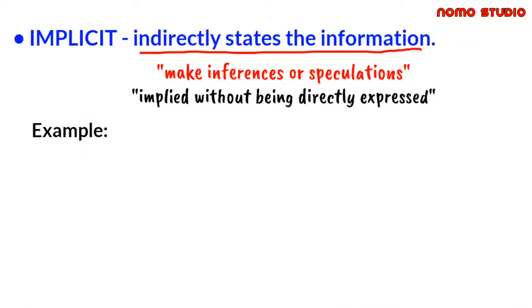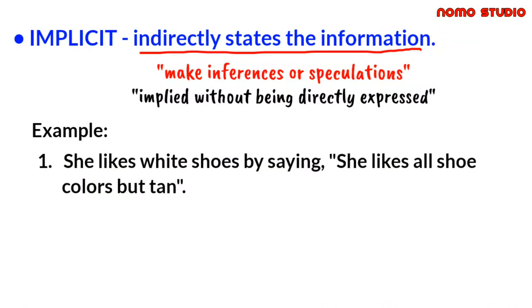For example, she said that she likes white shoes by saying she likes all shoe colors but tan. In this example, the woman states that she likes all shoe colors but tan, but she doesn't directly say that she likes white shoes. She implicitly does because color white is actually not a color tan.